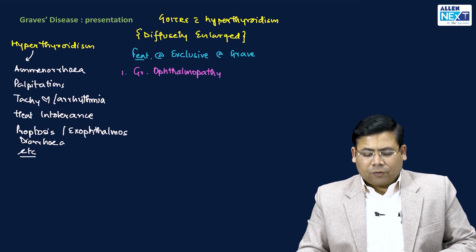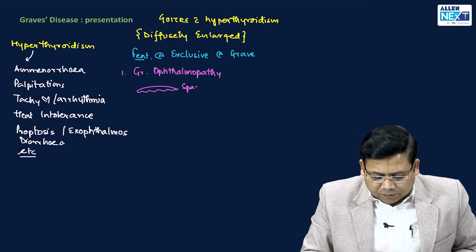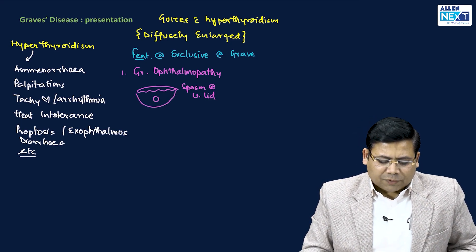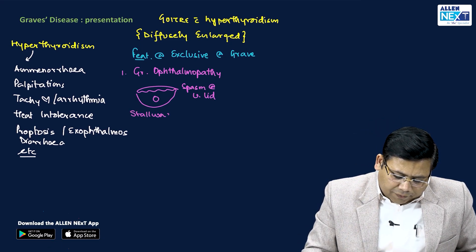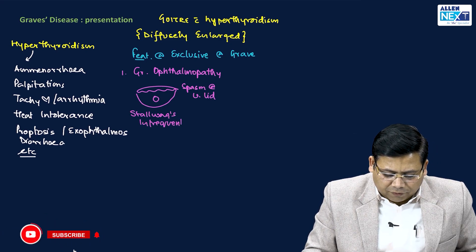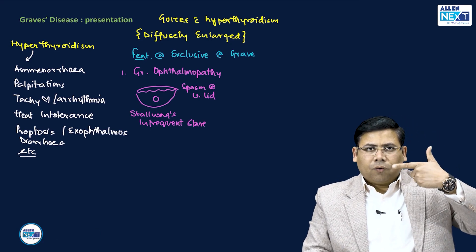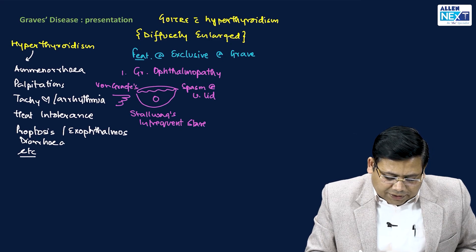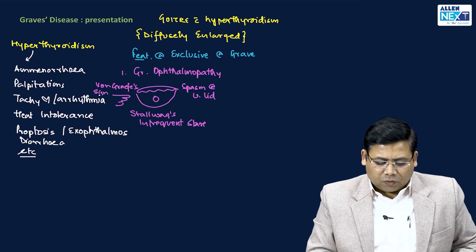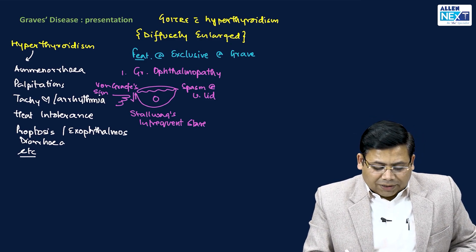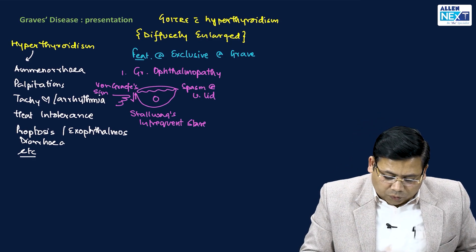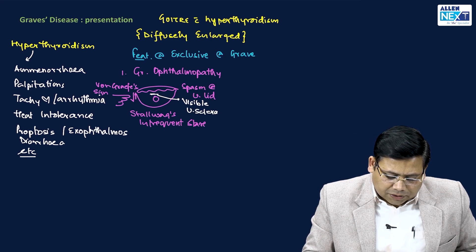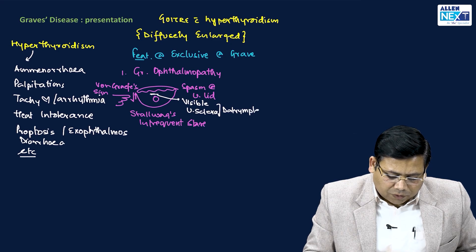In Graves ophthalmopathy: first, there is spasm of the upper eyelid causing an infrequent stare, known as Stellwag's sign. Second, if you ask the patient to follow a fingertip downward, there is lid lag, known as von Graefe's sign — this is upper eyelid lag. Third, normally the upper sclera is not visible, but due to spasm it becomes visible; this is called Dalrymple's sign.